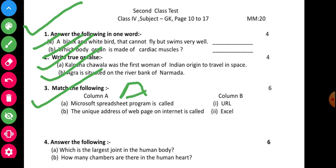Question number three: match the following. Column A to Column B. Point A — Microsoft spreadsheet program is called; Point B — the unique address of a web page on the internet is called. From Column B the answers are: URL and Excel. Match Column A with the correct answer from Column B.